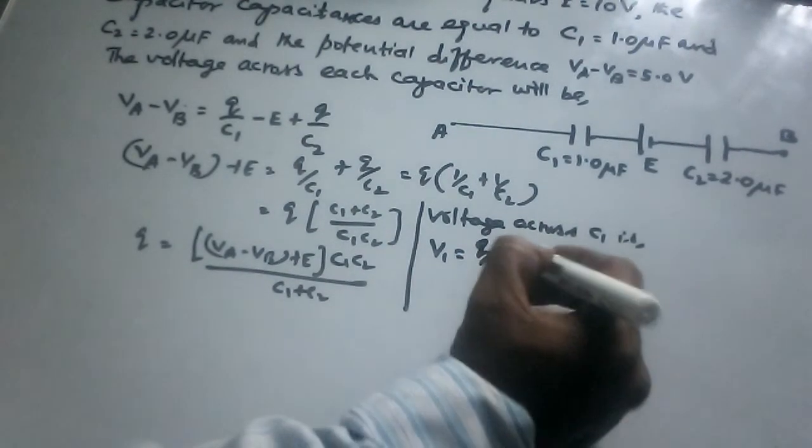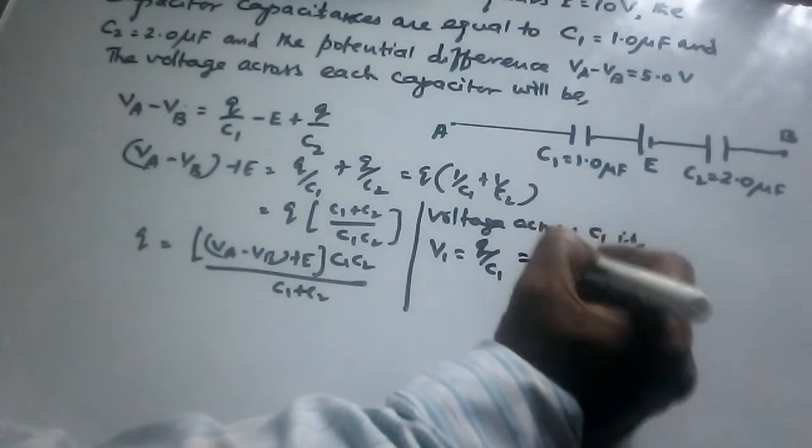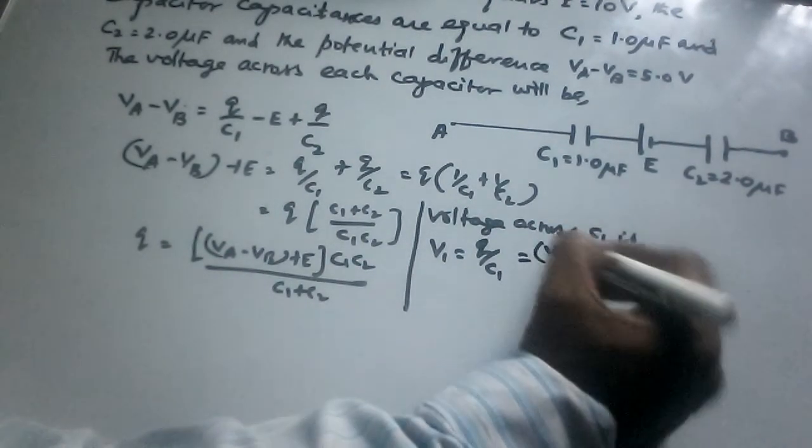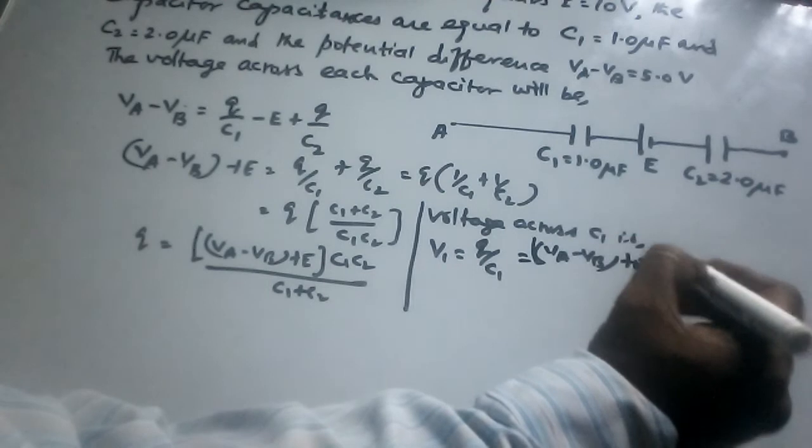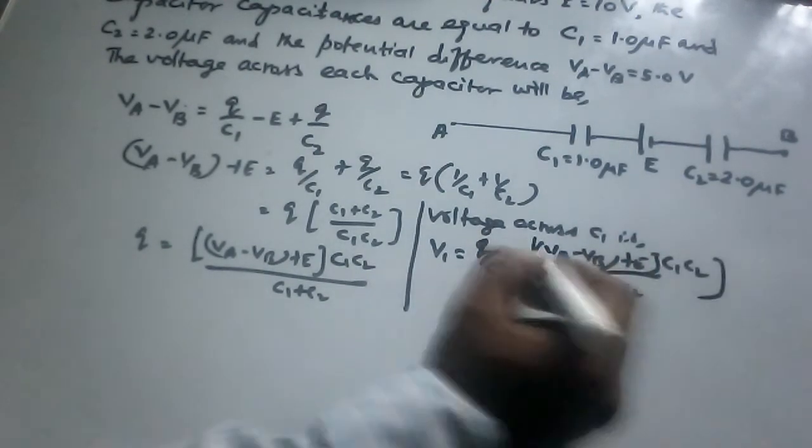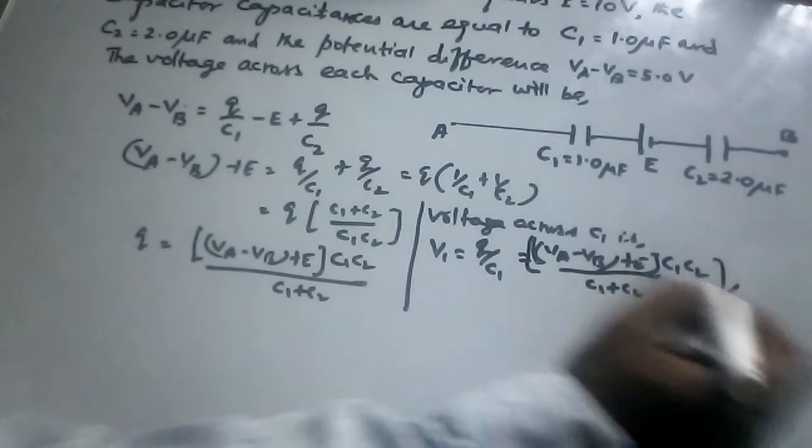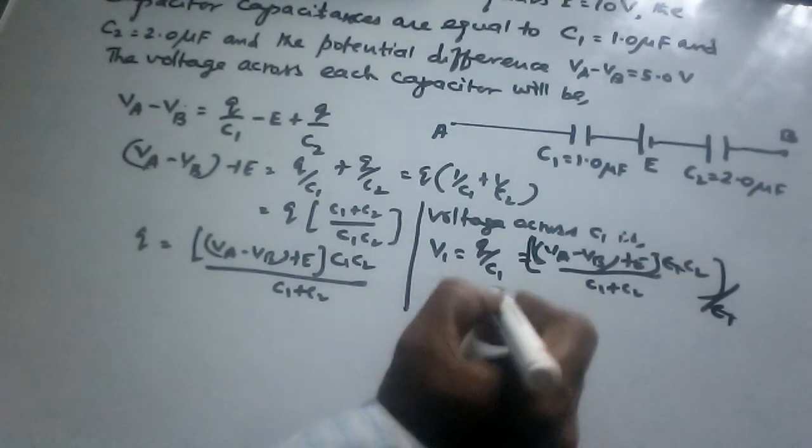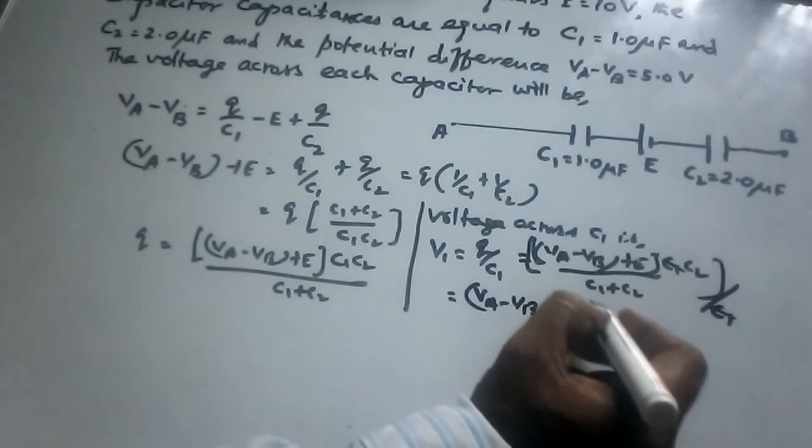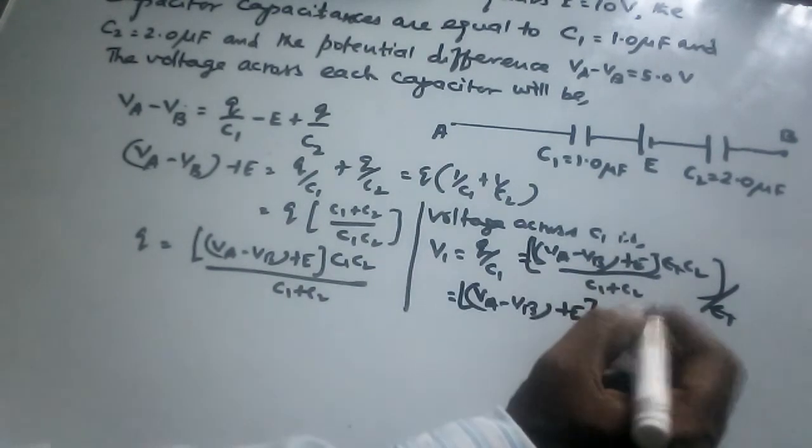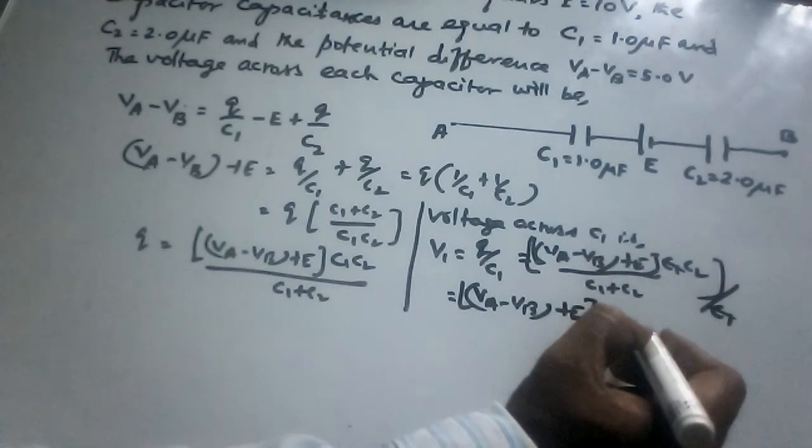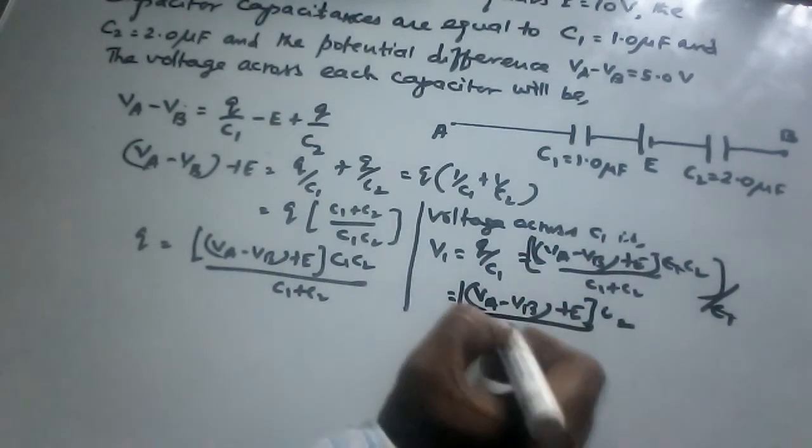V1 equals Q/C1, where Q is (VA minus VB plus E) times (C1 times C2)/(C1 plus C2). Dividing by C1, the C1 cancels, so V1 equals (VA minus VB plus E) times C2/(C1 plus C2).